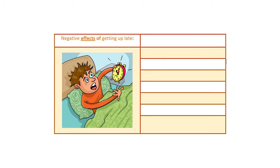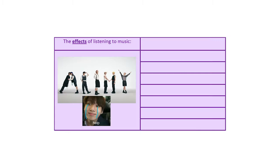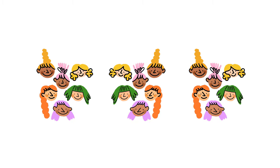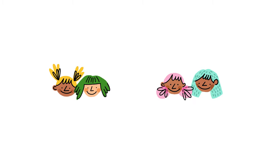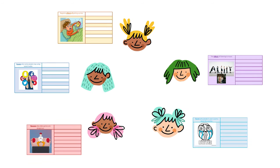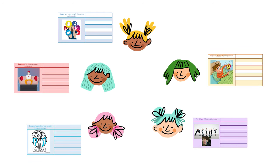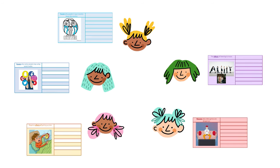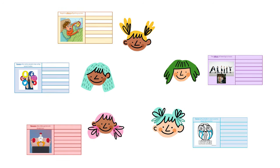I gave each student a paper with a particular topic, like these ones. If you have a large class, students can work in pairs or in groups. Then I explained that they have to write down one single cause or effect depending on their cards and pass it to the student next to them. On the new card, they do the same. The cards kept moving from one student to another until we got enough ideas.